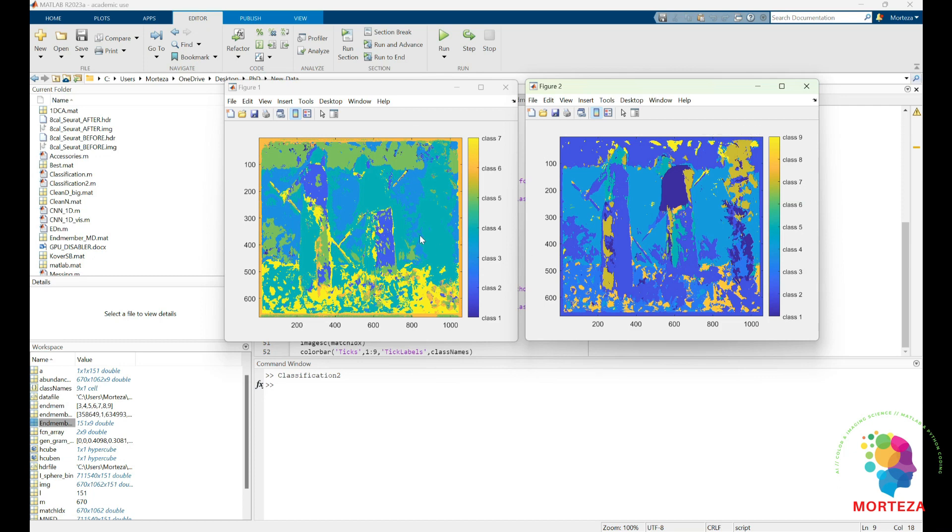Okay, the run is complete. This is classification in which I chose the endmembers visually, and this is classification using maximum distance. You could see that when I chose visually, I chose only seven endmembers, but according to maximum distance, we have nine endmembers.